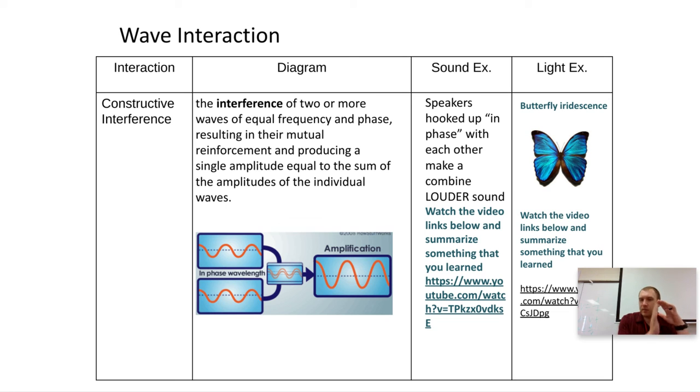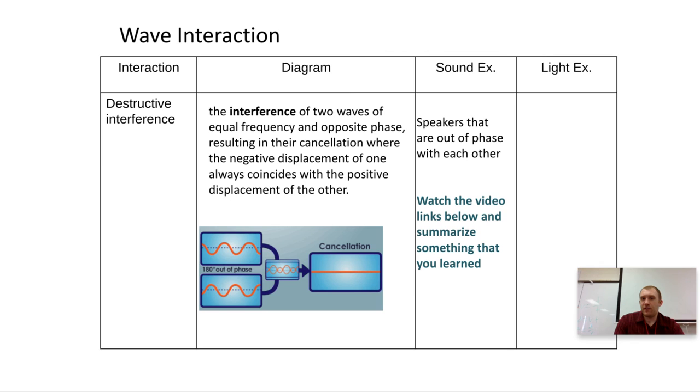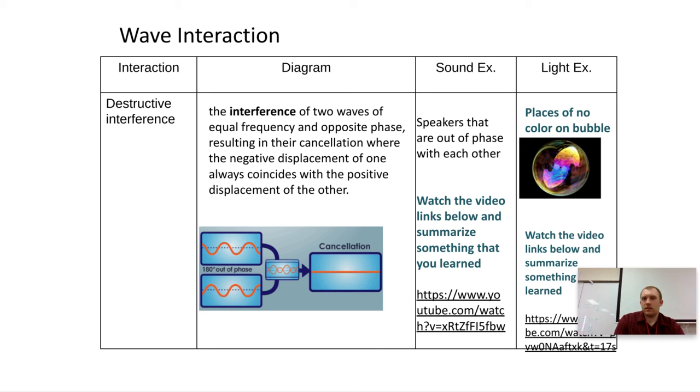So constructive is when they are the same - they're in phase, the peaks line up. Destructive is when the peak and trough line up, so they're opposites. Then they interfere and can cancel out. We have noise canceling headphones. Or light - some bubbles and stuff can do this too.